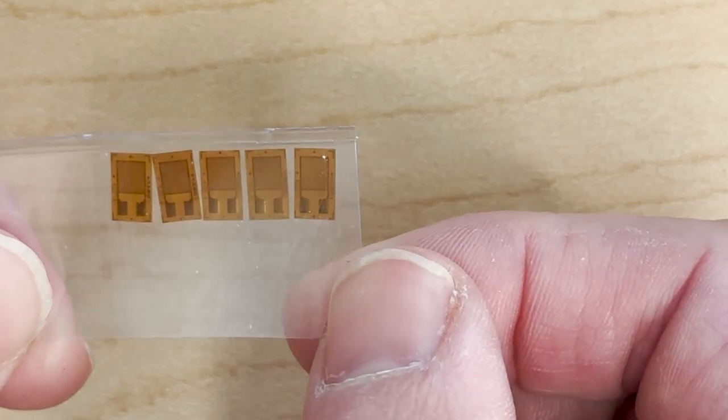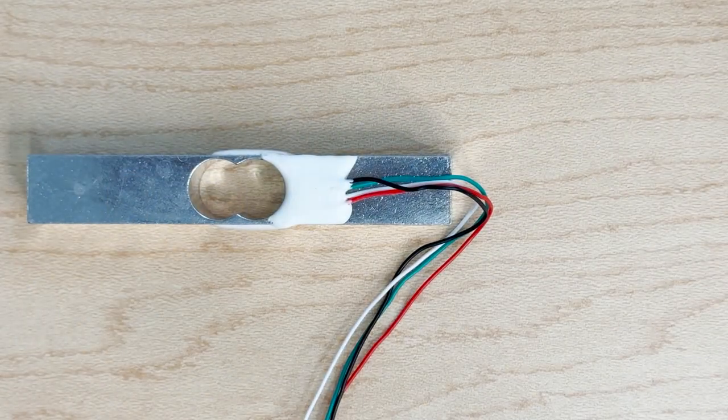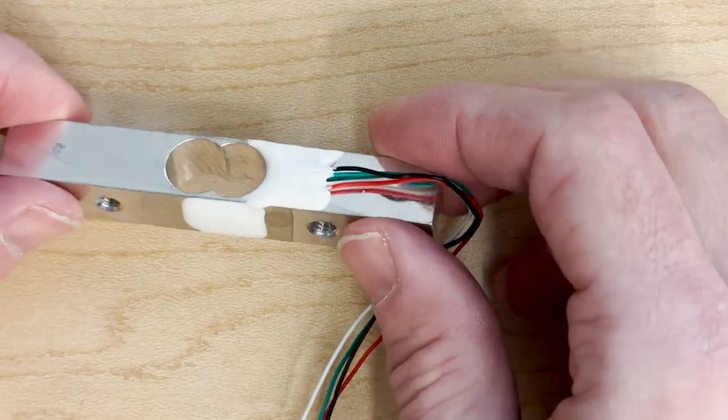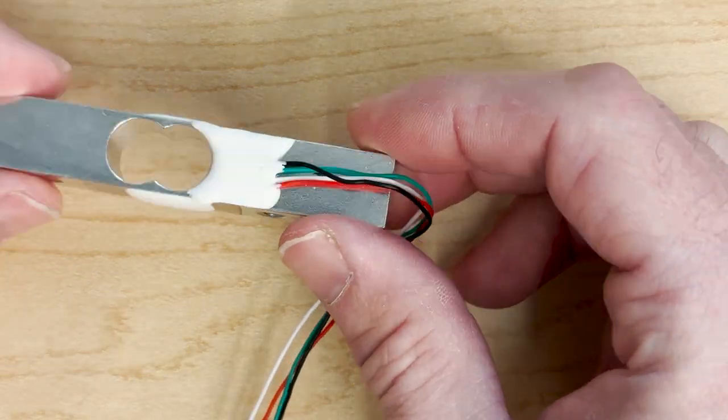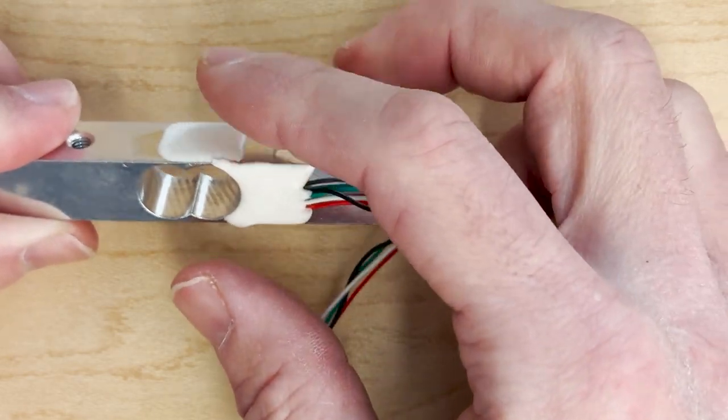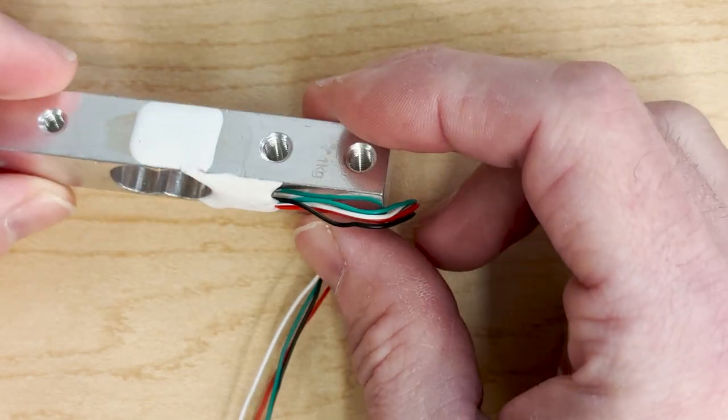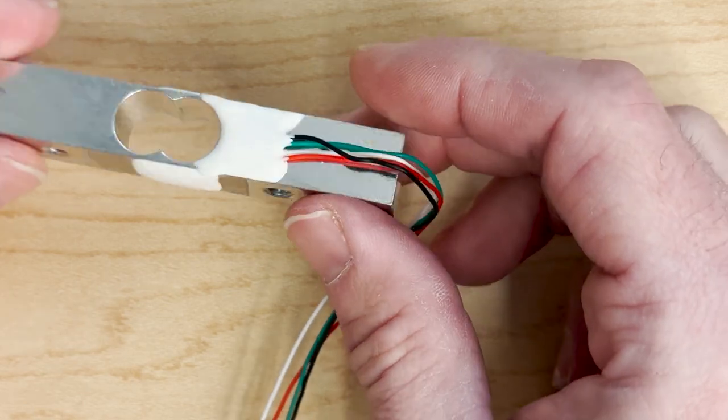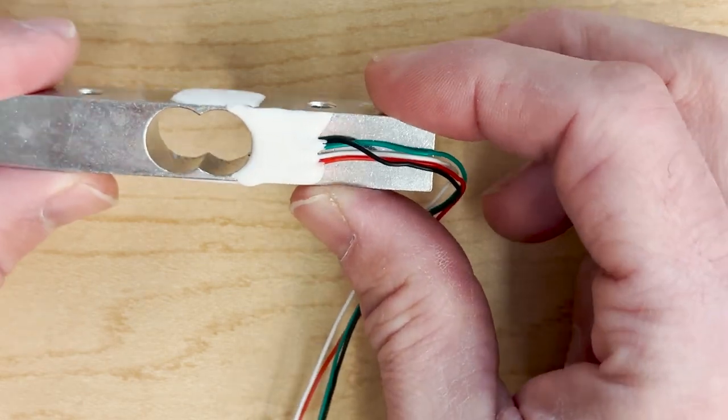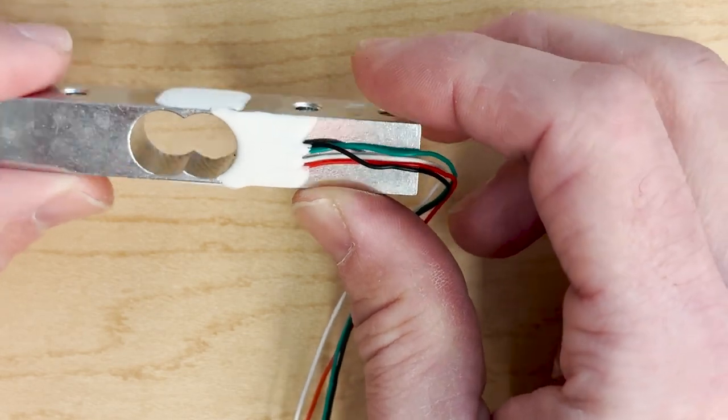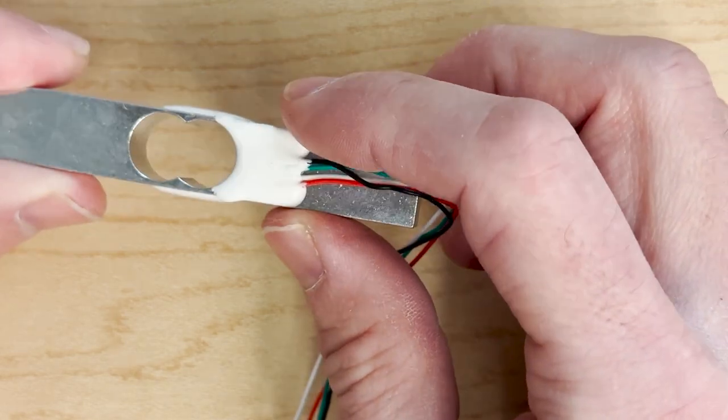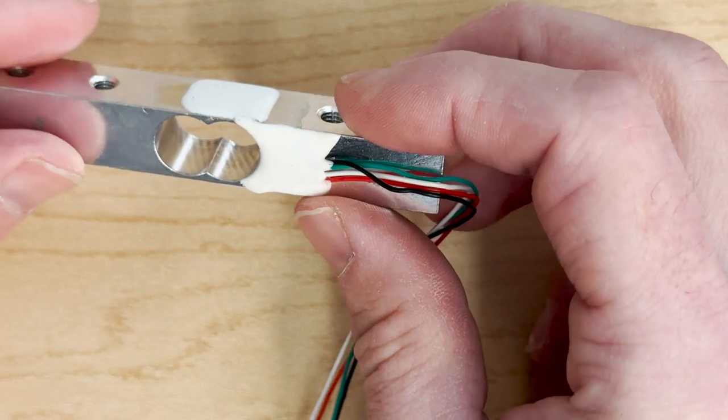You will be using a load cell. This is just a load cell, and underneath this paste here there are strain gauges embedded. If this aluminum piece gets bent in any way, those strain gauges will pick up on those small changes.